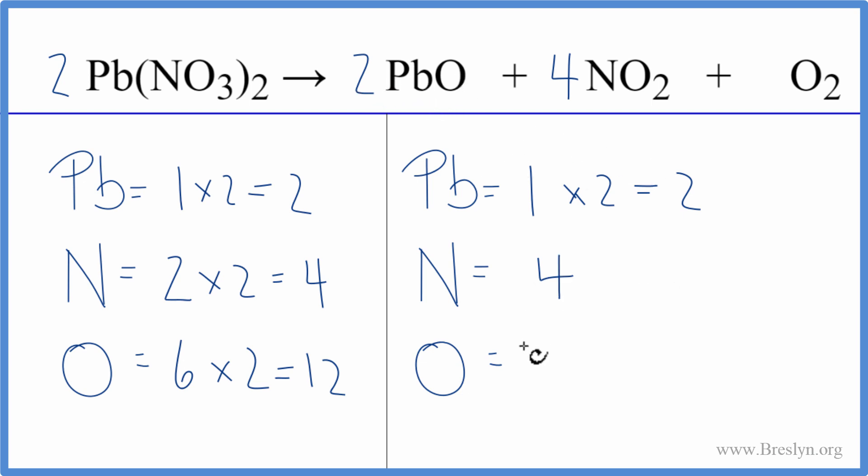So let's update these oxygens. I have two times one, that's two, plus four times two, that's eight, plus the two here, and two plus eight is ten, plus two is twelve, and this equation is now balanced.